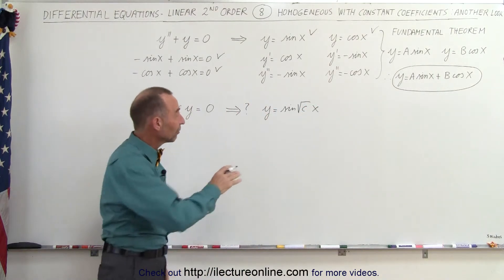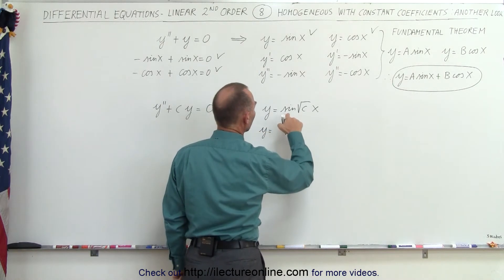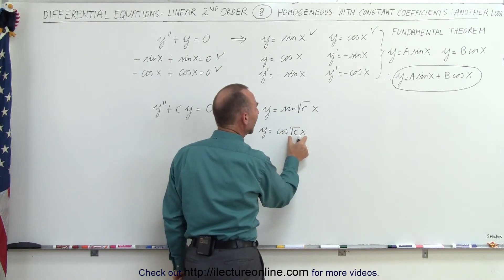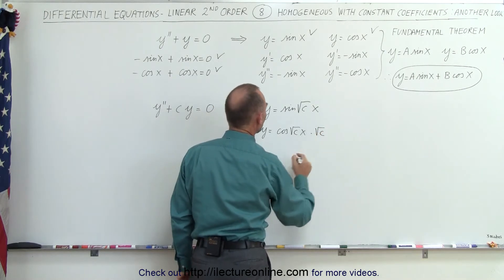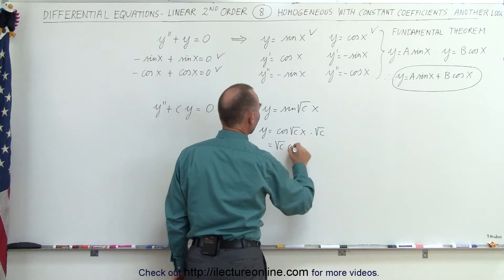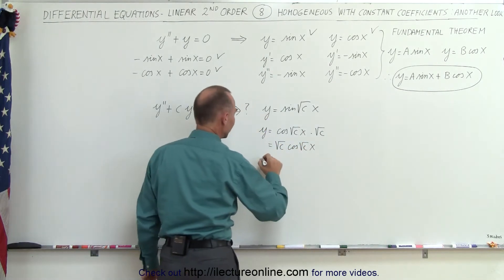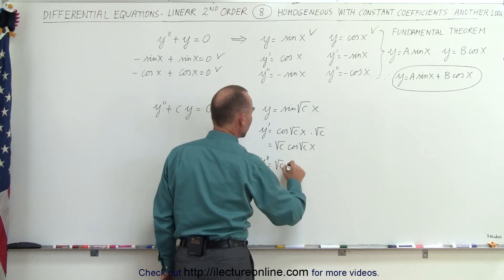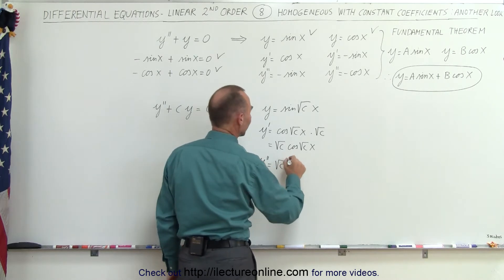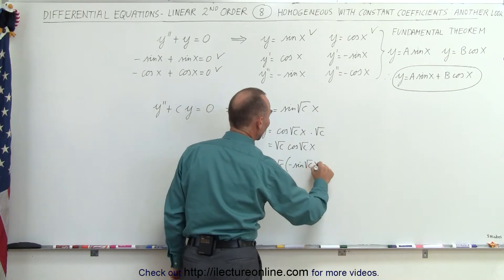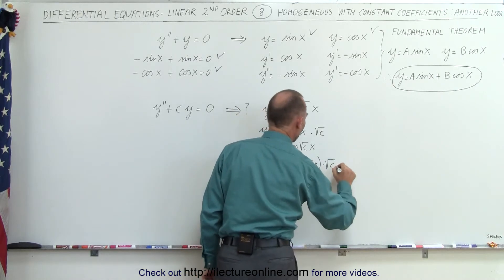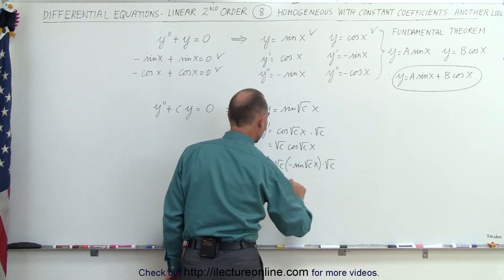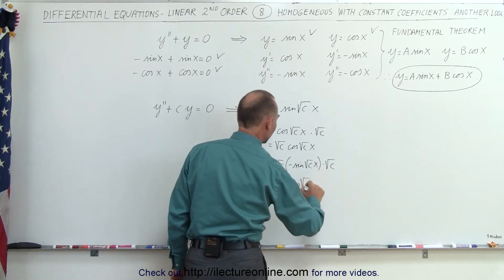Taking the first derivative: y prime equals cosine of square root of c times x, multiplied by the derivative of the angle, which is square root of c. So y prime equals square root of c times cosine of square root of c times x. Taking the second derivative, the derivative of cosine is negative sine, giving y double prime equals minus c times sine of the square root of c times x.